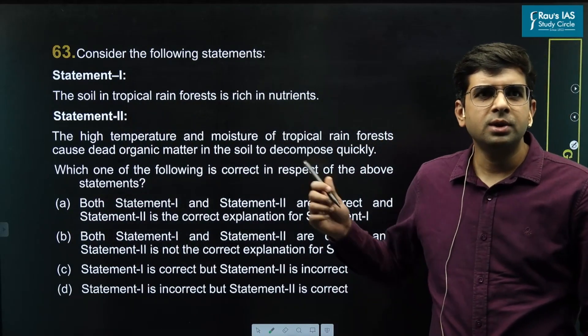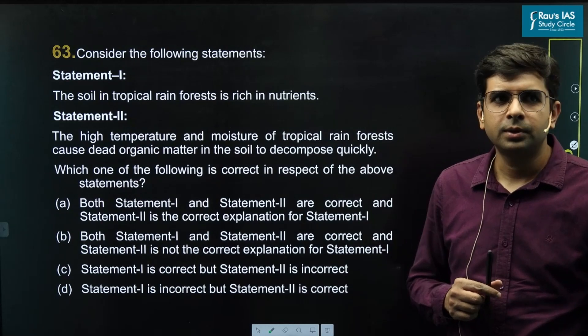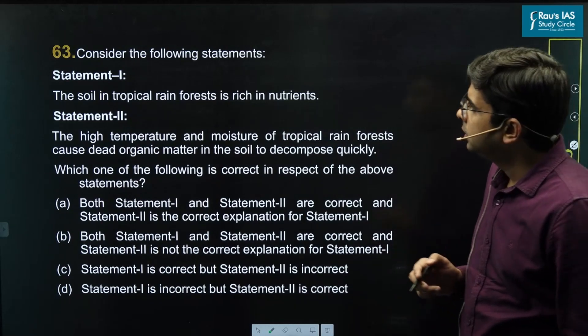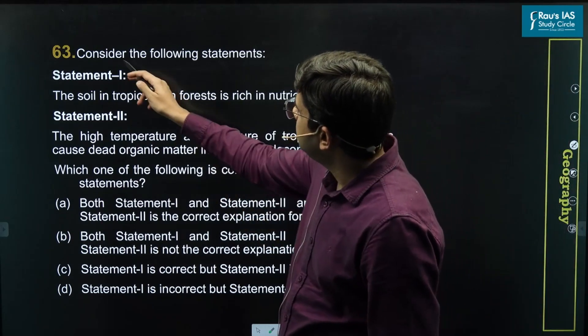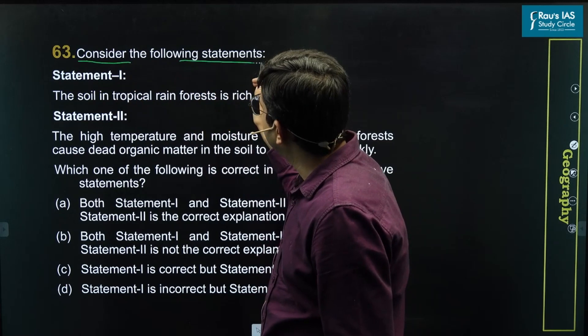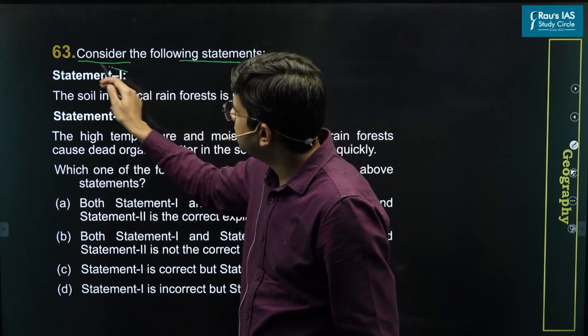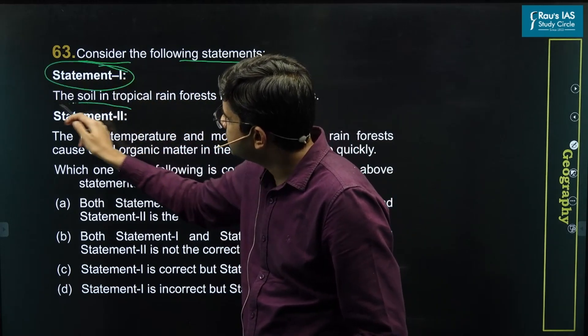Let's look at question number 63 of this year's prelims paper. This question is asking us to consider the following statements — two different statements are given: Statement 1 and Statement 2.